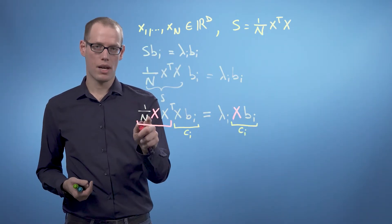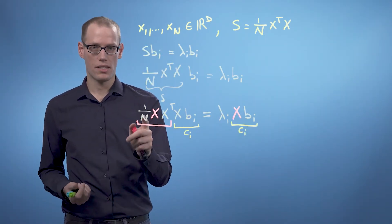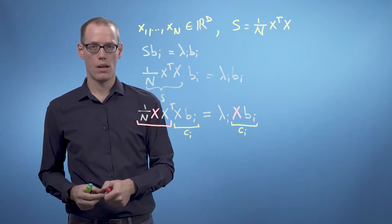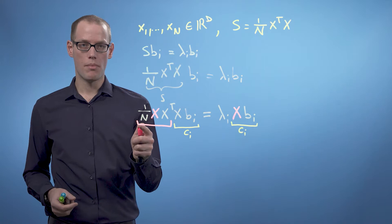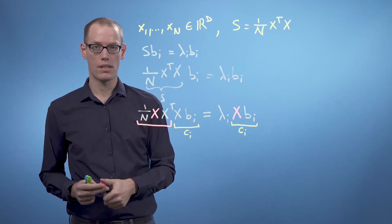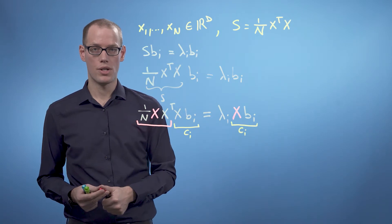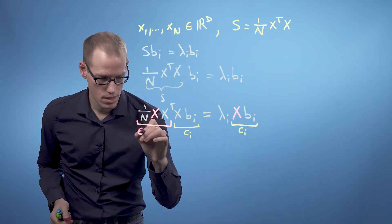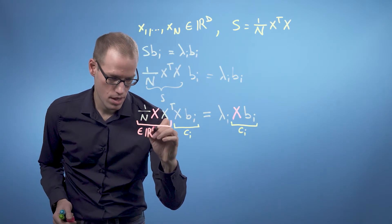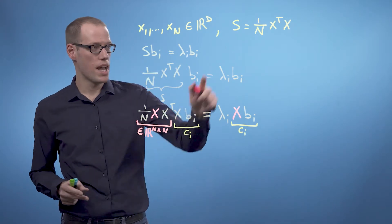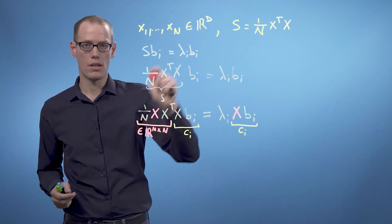This means that 1/N X X^T has the same non-zero eigenvalues as the data covariance matrix. But this is now an n by n matrix so that we can compute the eigenvalues and eigenvectors much quicker than for the original data covariance matrix. So this is an n by n matrix, whereas S used to be a d by d matrix.